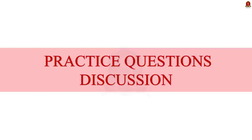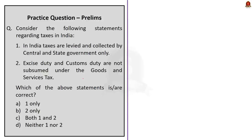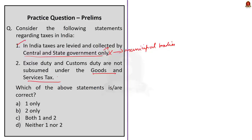Preliminary practice question 1: Consider the following statements regarding taxes in India. Statement 1 says taxes are levied and collected by central and state governments only — this is incorrect, as the tax structure also includes local municipal bodies. Statement 2 says excise duty and customs duty are not subsumed under GST — this is also incorrect, as they are subsumed under GST. Therefore, the answer is D: neither one nor two.